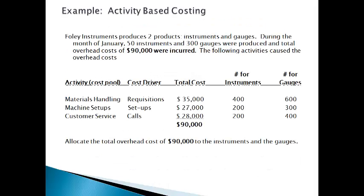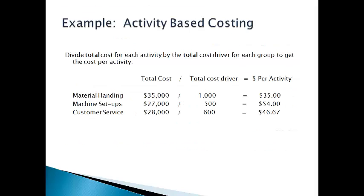Let's talk through a quick example of activity-based costing. This company manufactures two different products with three different types of overhead costs. The traditional costing method of one overhead rate and one activity will not properly allocate cost to each product. The first step is to identify the cost drivers, and the second step is to total the cost of each cost pool. The company must keep track of how many times each activity is done for each product, then determine the cost incurred each time the activity occurs. It costs $35 each time material is handled and $46.67 each time a service is provided to a customer.